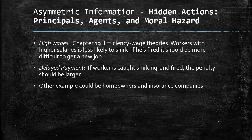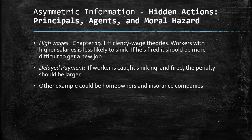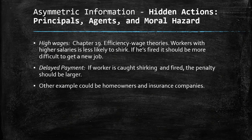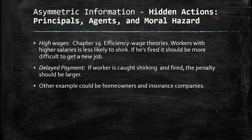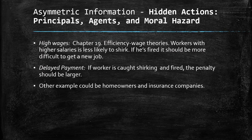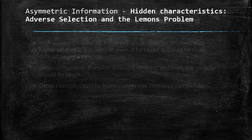Another example to grasp the principal-agent problem and moral hazard is homeowners and their insurance company. The homeowners are the agents — they are the informed party. They know if they take care of their houses and have protection against fire, hurricanes, and so on. But the insurance companies don't have access to that information — they are the uninformed party, the principal. Homeowners may take advantage of this situation to gain benefits not reflected in the premium they are paying.